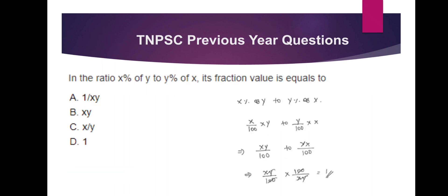The ratio of x percentage of y to y percentage of x. So x% of y is (x/100) × y, divided by y% of x which is (y/100) × x. So the ratio is xy/100 to yx/100. Multiplying through, the 100s cancel, and xy and yx cancel to give 1 to 1. The reciprocal is 1. So the answer is 1.